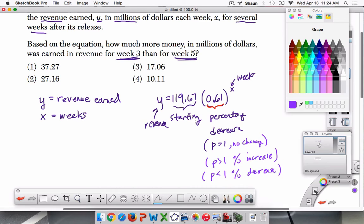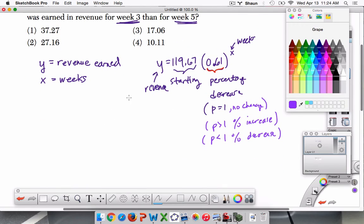Now, I'm going to talk briefly about why this makes sense. And then if you want to, you can fast forward. We'll talk about how to quickly solve this problem. So here's some background. So why does it make sense that 119.67 is the starting value? Let's do some calculations. So $119.67 million, that's the starting value of the movie.